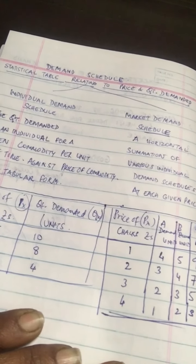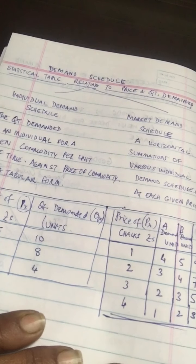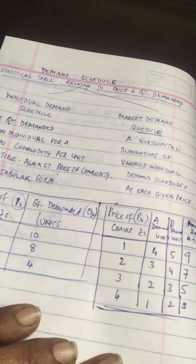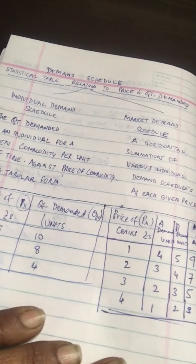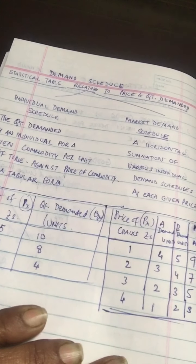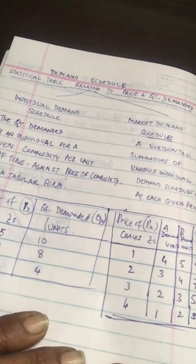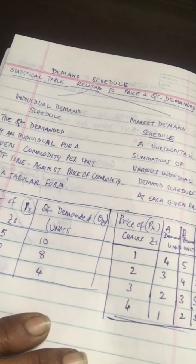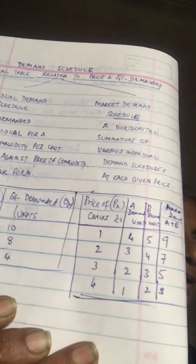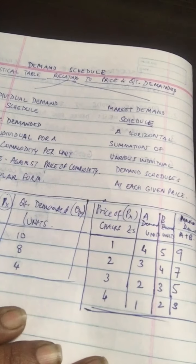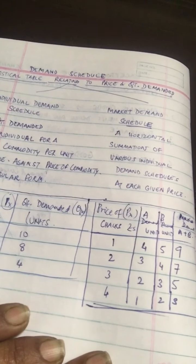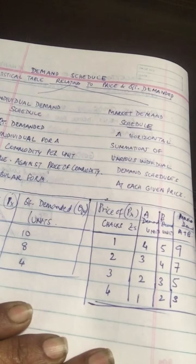When the price is 1 rupee, market demand is 4 plus 5, which equals 9. When the price increases to 2, market demand falls to 3 plus 4, which equals 7. When the price increases to 3, market demand is 2 plus 3, which equals 5. And when the price increases to 4, market demand falls further to 3. This follows the law of demand: higher the price, lower the demand.